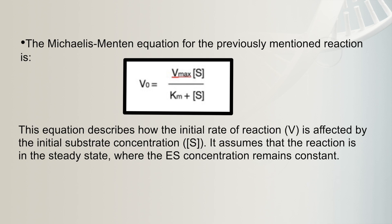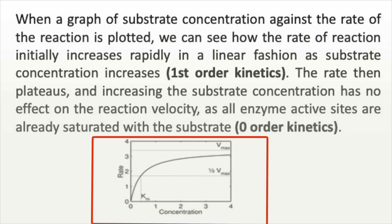When a graph of substrate concentration is plotted against the rate of reaction, we can see that the rate initially increases rapidly in a linear fashion as substrate concentration increases — this is first-order kinetics. The rate then plateaus, and increasing the substrate concentration has no further effect on the reaction velocity as all enzyme active sites are already saturated with the substrate — this is zero-order kinetics. This plot of the rate of reaction against substrate concentration has the shape of a rectangular hyperbola.